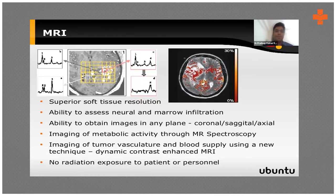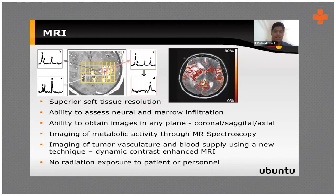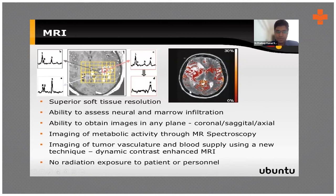MRI is superior for soft tissue resolution, and it also has the ability to assess neural as well as marrow infiltrations. We can precisely see neural structures and bone marrow. Especially in the brain, you can see even the minute details of each and every area, which helps us to properly plan our high dose and low dose areas.